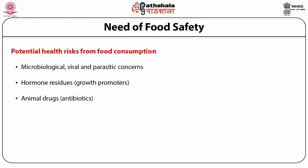If we take food contaminated with antibiotics, it affects human health. Next is chemical residues: many pesticides are used on crops, and these pesticides come into the food which we consume directly, causing very serious diseases.